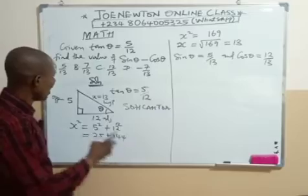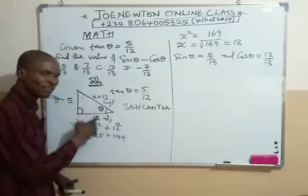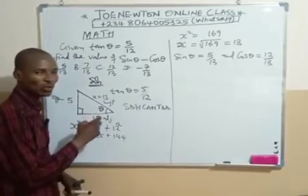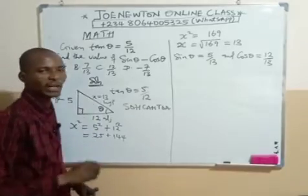Note, if this theta is here, here becomes the opposite, facing it, while here becomes the adjacent. Here remains the hypotenuse as it faces the right angle.